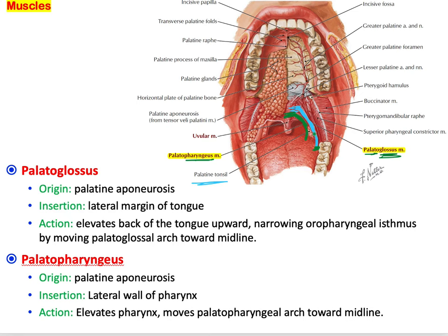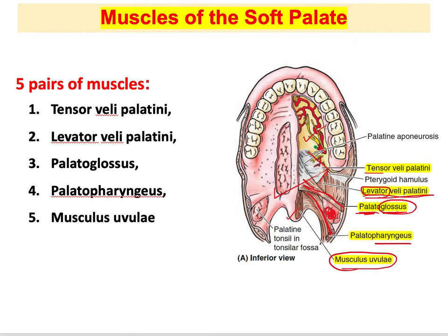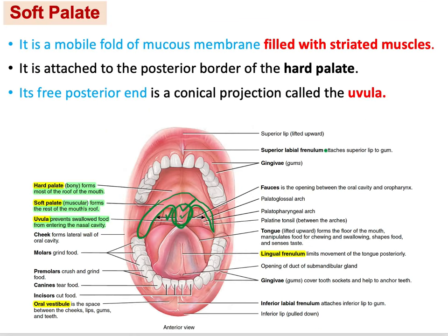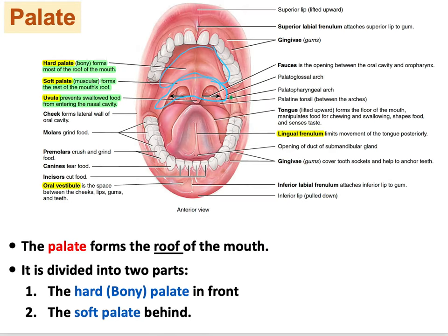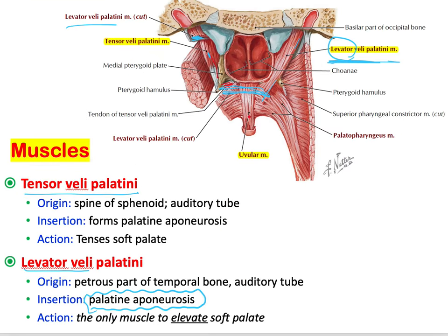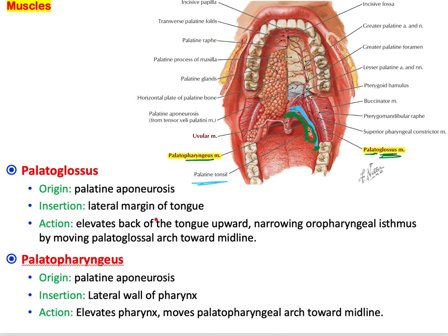Between these two muscle arches lies the palatine tonsil. Look in a mirror — the first arch is the palatoglossus, then the palatine tonsil, and behind it is the palatopharyngeal arch. These arches frame the palatine tonsil.